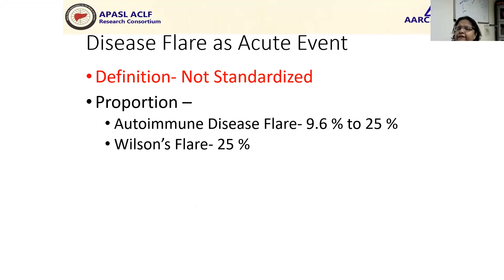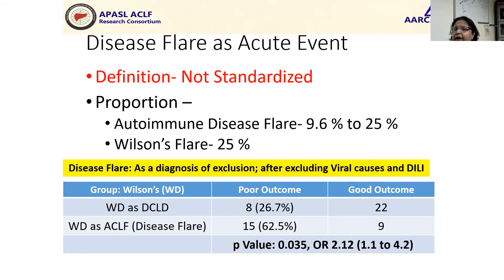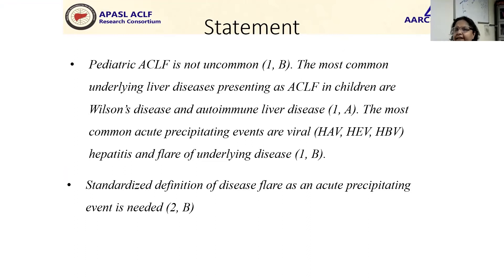It has been noticed very clearly that no cholestatic liver disease or metabolic liver disease seems to be presenting as ACLF, at least from the data presented from ILBS. Regarding the disease flare, it seems to be present in autoimmune in 19.6 to 25%, and as a Wilson's flare in about 25%. When we looked at how patients with Wilson's flare fare, we found that patients with ACLF who come with Wilson's flare seem to do the worst. So it is important for us to define these flares. The 2019 APACEL-ACLF Consortium statement says that a standardized definition of the disease flare is needed, which is still not available.